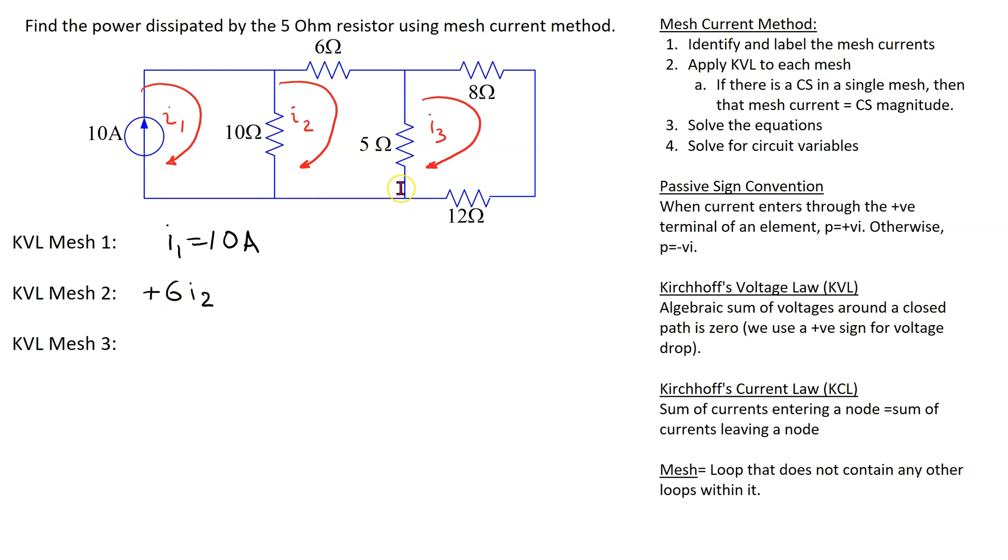We have a positive sign because there is a voltage drop across the resistor, and we use a positive sign for the voltage drop.